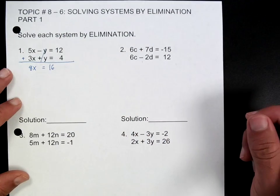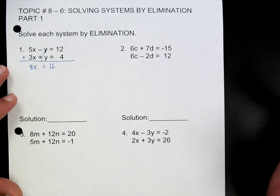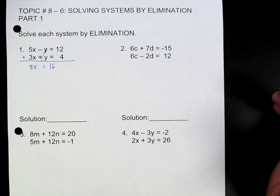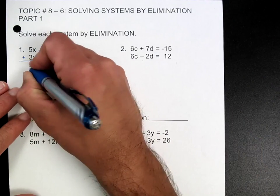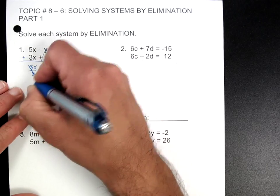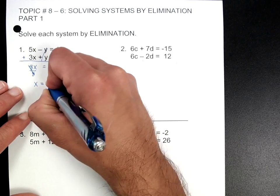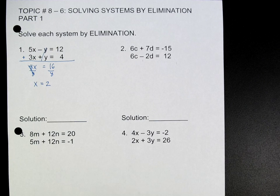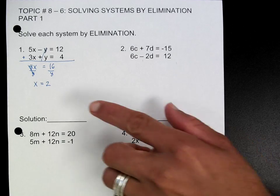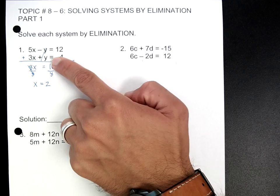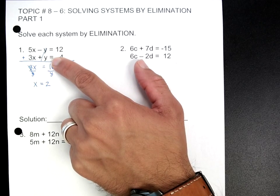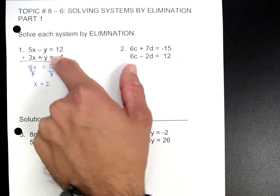This would be 16. So then I'm going to solve for x. The whole point is to have one variable equal one number. Divide by 8, so we've got x equals 2. Now you're going to grab that x equals 2 and plug it in either into this equation or that equation. It really doesn't matter which one you pick; it should give you the same answer. Pick one and plug it in.